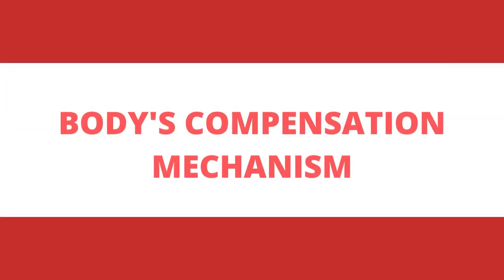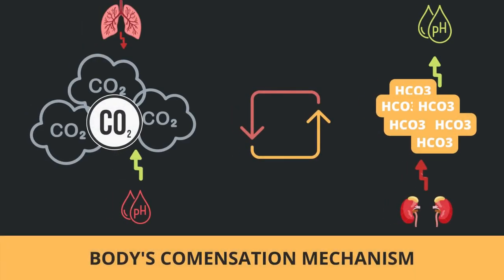Now we are going to see the body's compensation. When lungs fail to wash out carbon dioxide, there is accumulation of CO2 in the blood, causing a drop in pH. Here the kidneys play their role by absorbing bicarbonate to maintain acid-base balance of the blood. This is called the body's compensation mechanism, which plays an important role to maintain the buffer of blood and pH ideal, that is between 7.35 to 7.45.